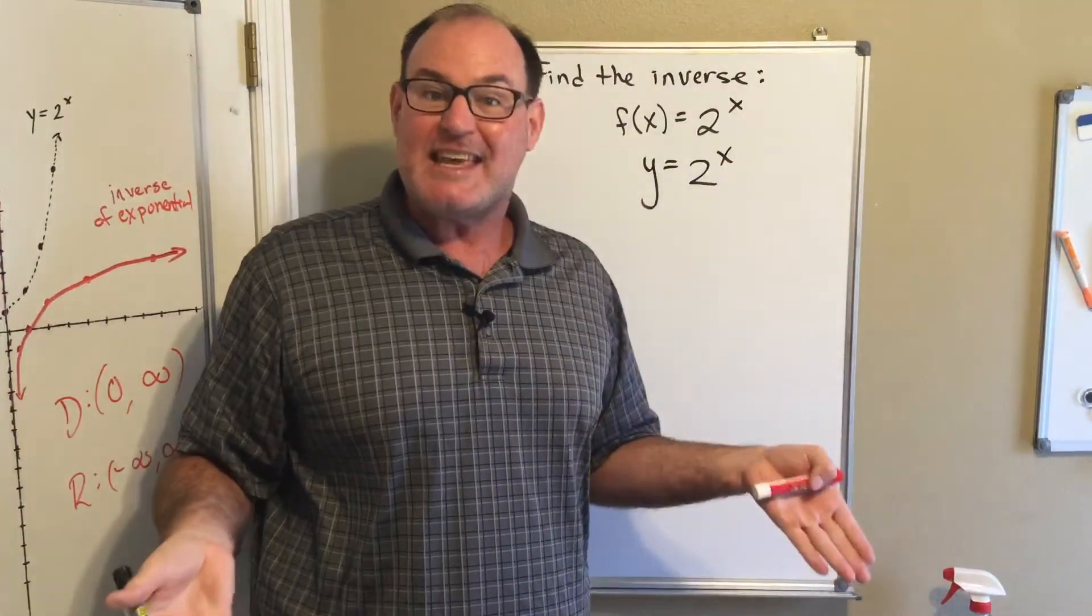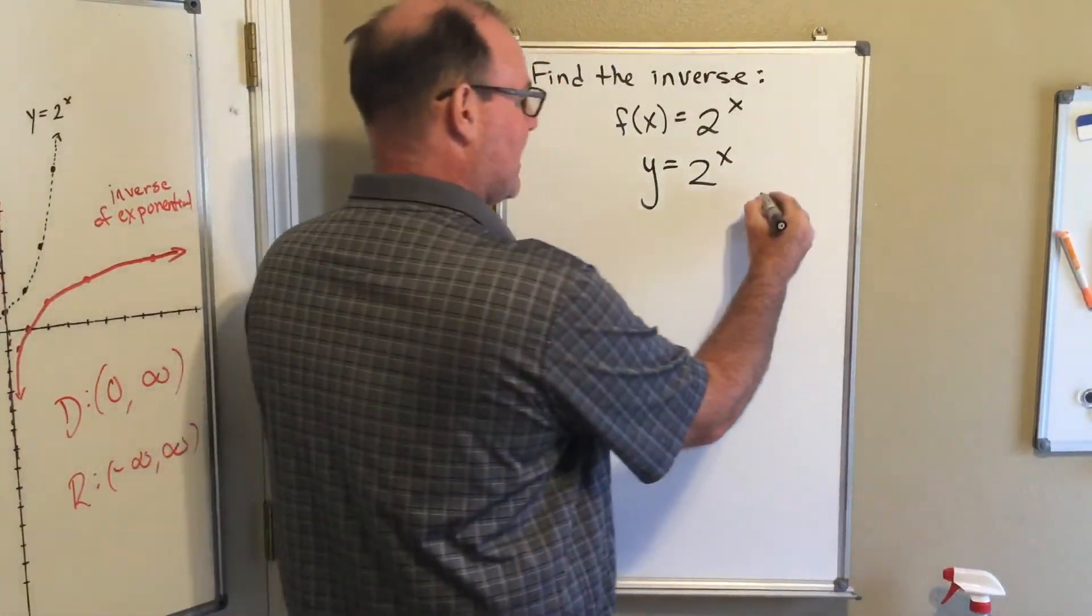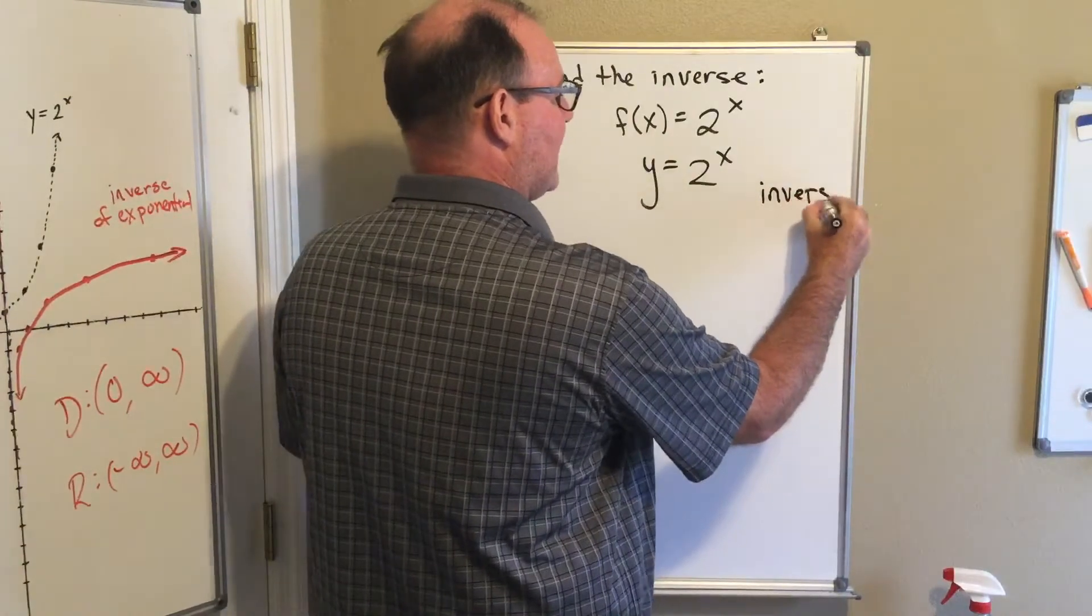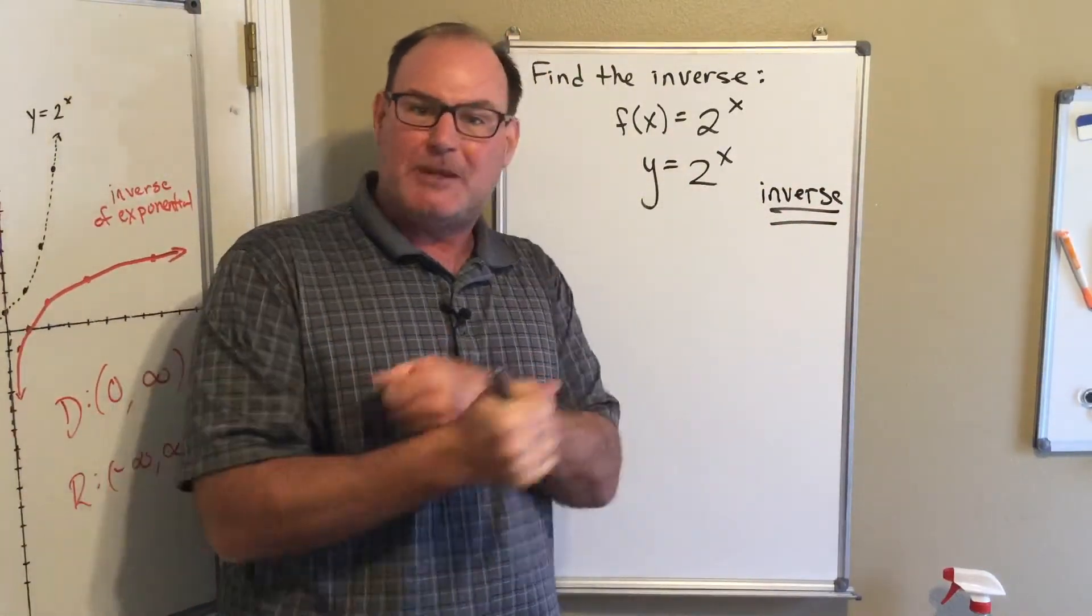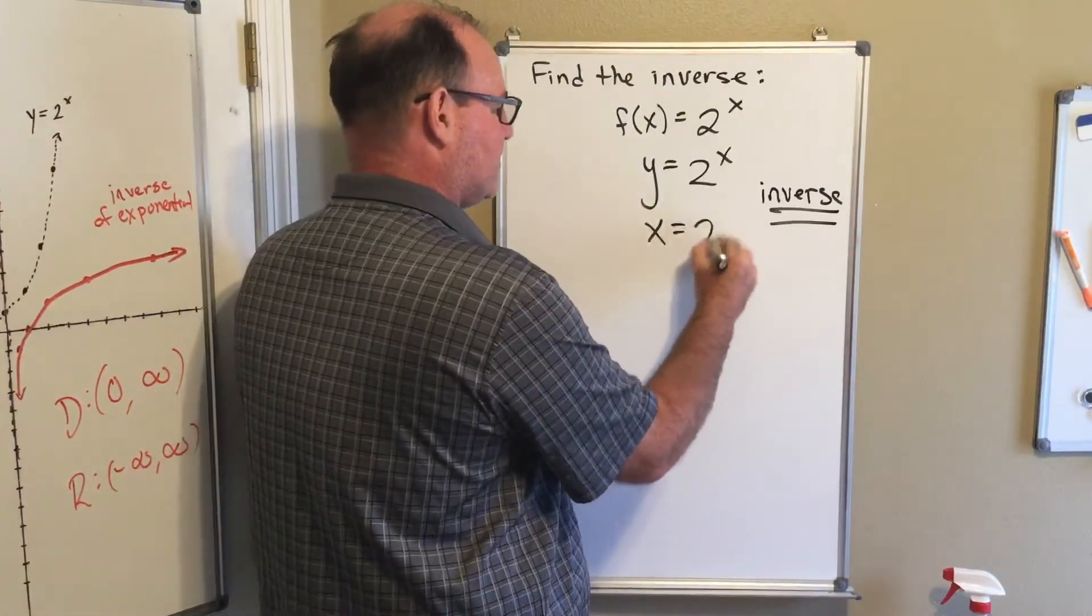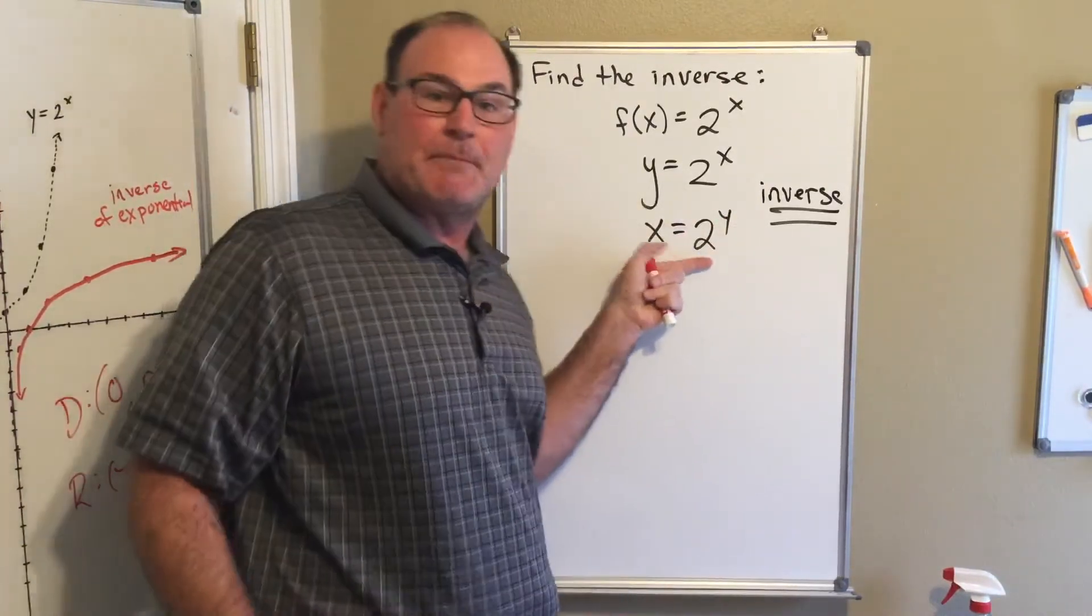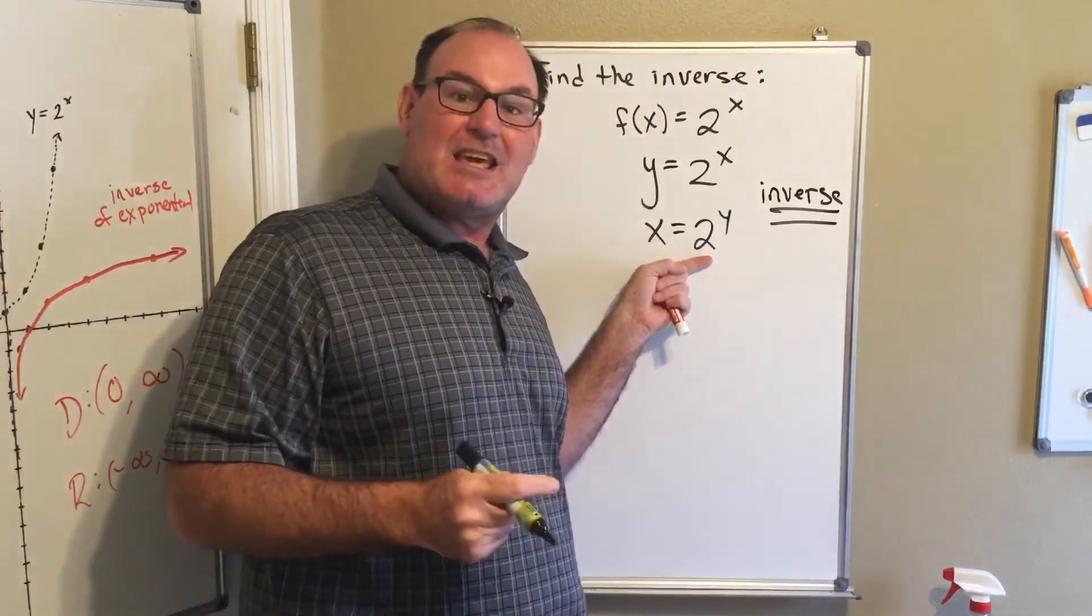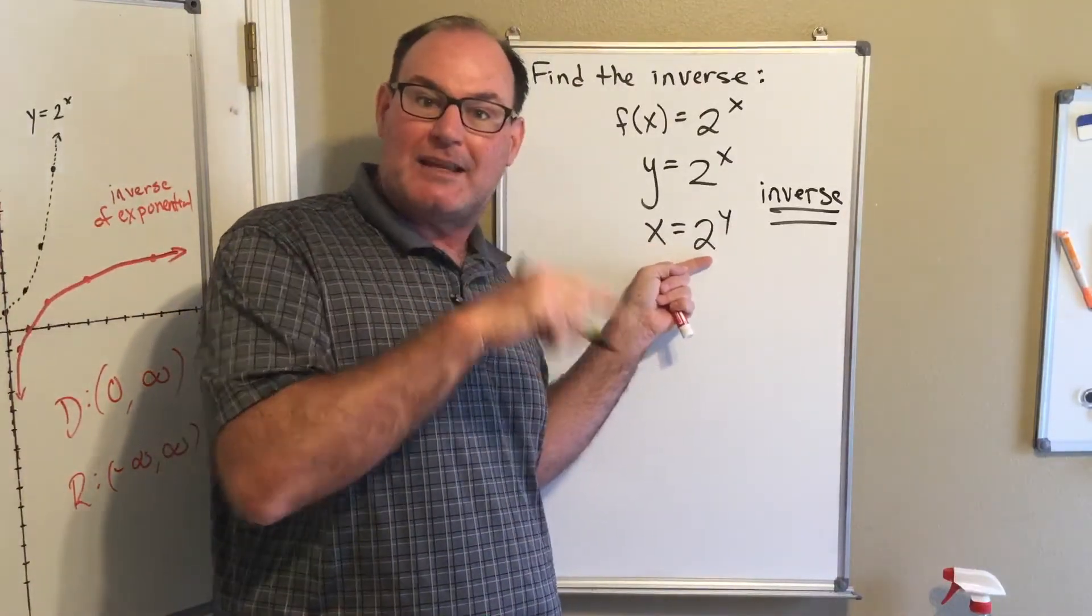Now here is the inverse step. Remember, finding the inverse means I flip the x and y values. So here it is: x equals 2 to the y. This is the inverse. This is the equation of the graph we created in the previous video.